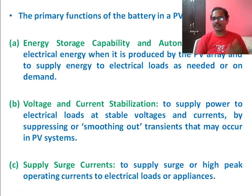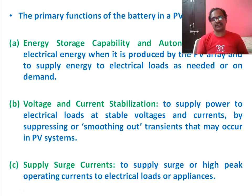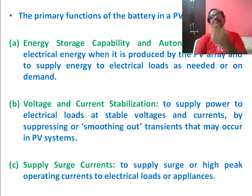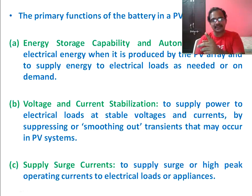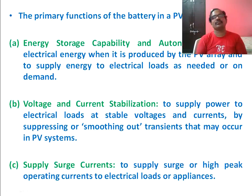Even though there is no solar radiation, your system should be capable of producing energy. If there is no sunlight, the panel stops working and the battery won't get charged. That is why you need to keep a number of days of autonomy. If you require 100 watt-hours per day, and you take two days of autonomy, you need to double the battery size, so the battery can last for two more days without sunlight.